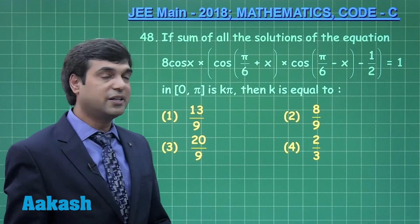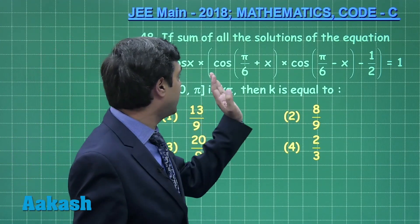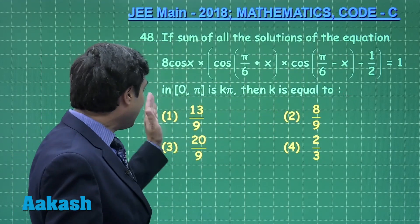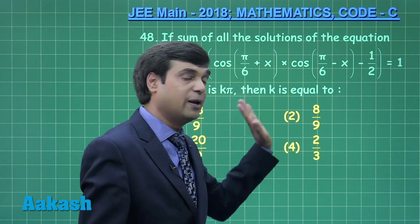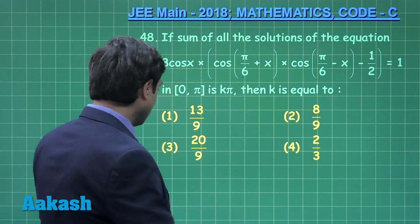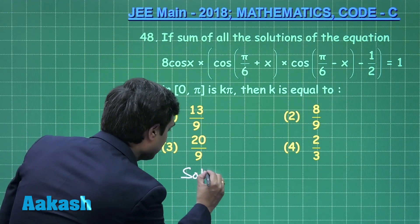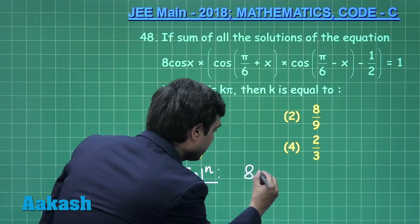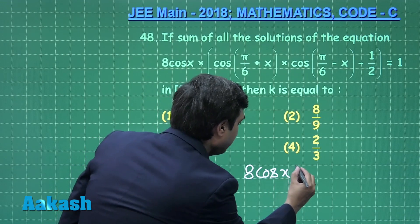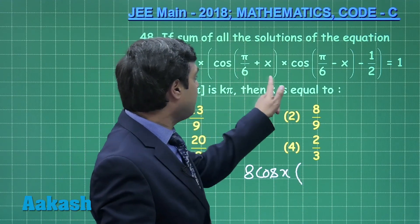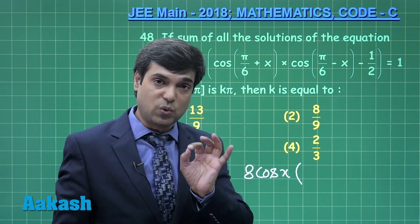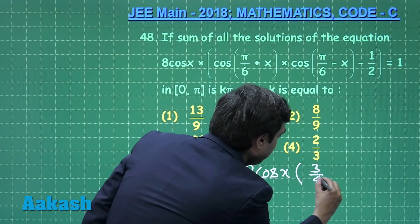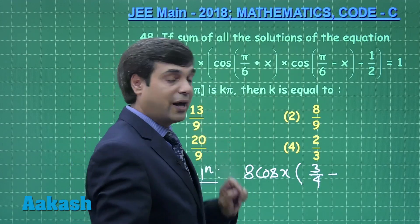Let us consider question number 48, a trigonometry question. The sum of all solutions of the equation in [0, π] equals kπ — find k. The equation simplifies using 8cos(x) · cos(a+b) · cos(a−b) = cos²a − sin²b, giving cos²(π/6) − sin²x, which is 3/4 − sin²x.